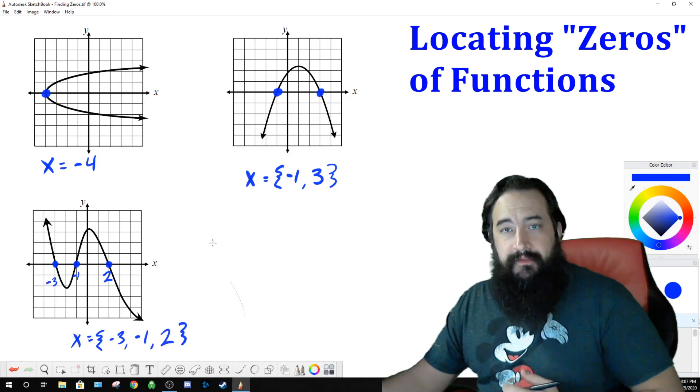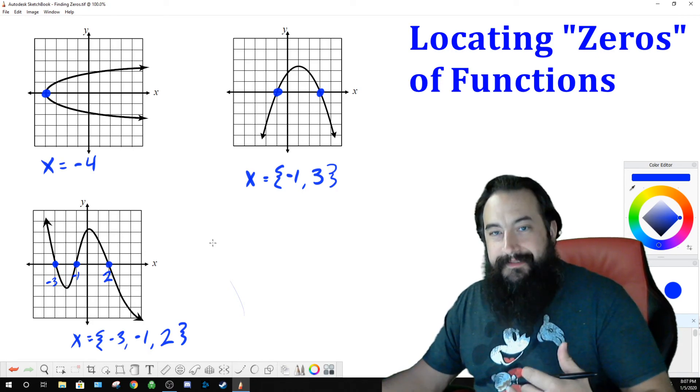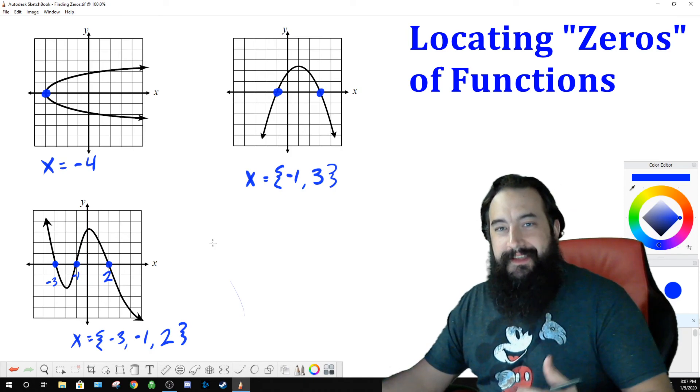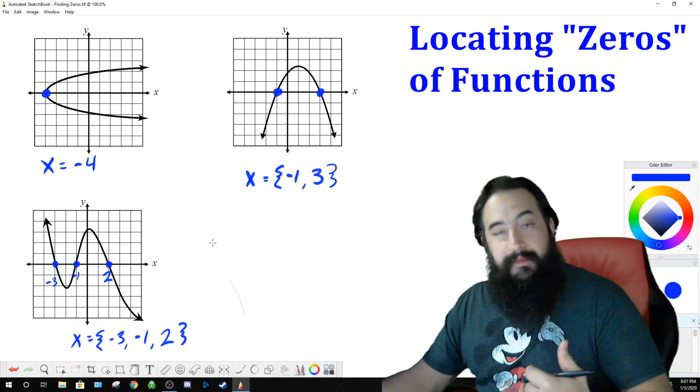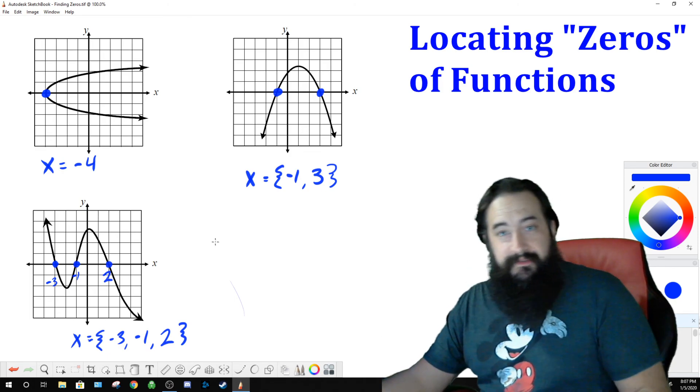And that's all. So that's how you locate zeros on a graph. Also known as x-intercepts. Also known as roots. Also known as, man, just so many words that are the same thing. Solutions. All right.